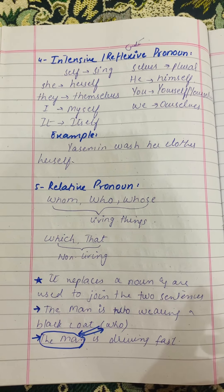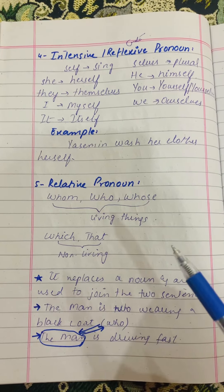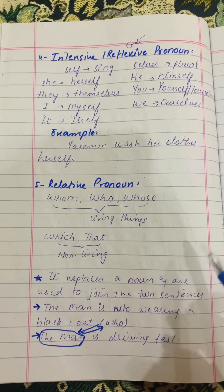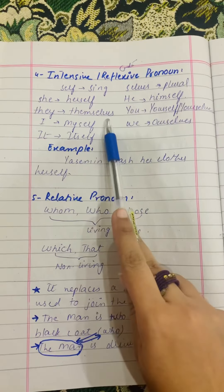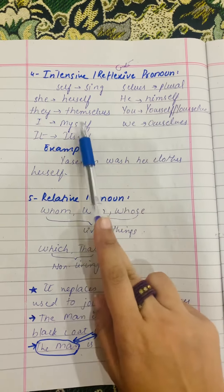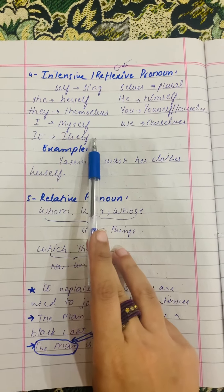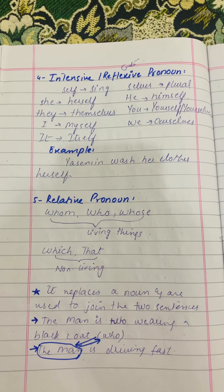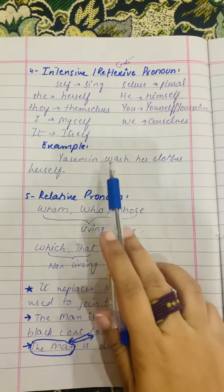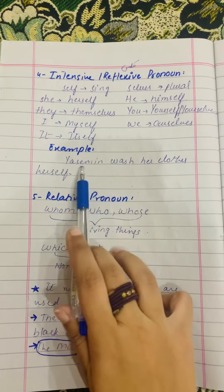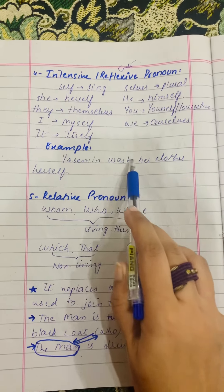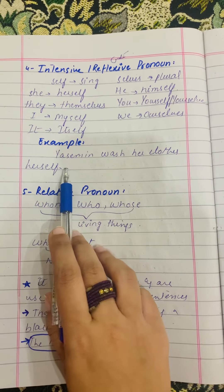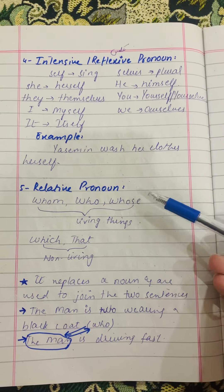Number four — intensive, also known as reflexive, pronouns. These can be singular or plural. For example: she/herself, he/himself, they/themselves, you/yourself, I/myself, we/ourselves, it/itself. For example: 'Jasmine washed her clothes herself' — here the relation shows that Jasmine washed her clothes by herself.